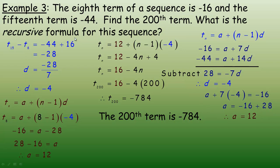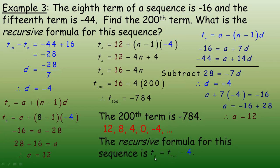The last part asks for the recursive formula for the sequence. The common difference is negative 4, so the sequence goes down by 4 each time: 12, 8, 4, 0, negative 4. The recursive formula is: the nth term equals the term before it minus 4. So any term is equal to the preceding term minus 4.